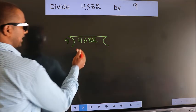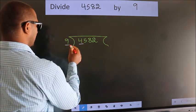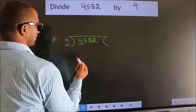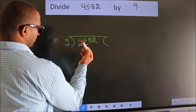here we have 4, here 9. 4 smaller than 9. So we should take two numbers. 45.